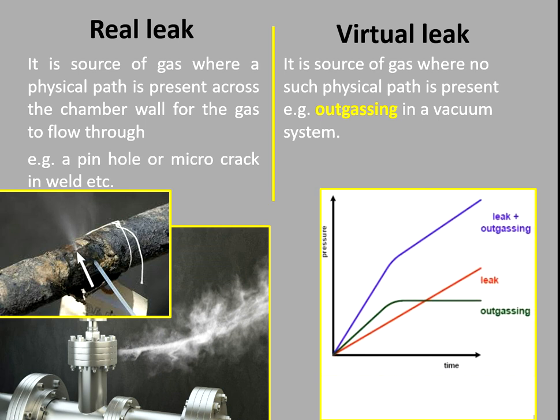A virtual leak is a source of gas where no physical path is present. An example is outgassing in a vacuum system. Outgassing means when a chamber is under vacuum, gases trapped in the metal during the manufacturing process get released. In the graph, the green curve shows pressure increasing from zero up to a certain limit and then becoming constant, as there is no more gas trapped inside the material.